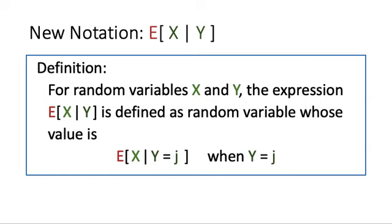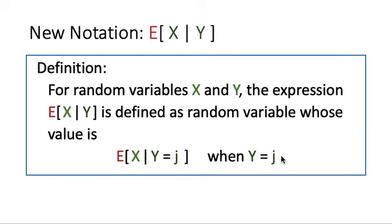Before that, let us introduce a new notation which reads: expected of X given Y, where X and Y are both random variables. This expression is defined as a certain random variable. The value of this random variable is equal to the expected of X given the event Y equals j, when Y is equal to j.